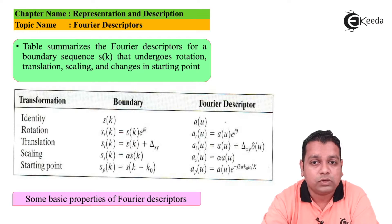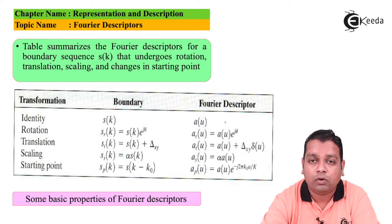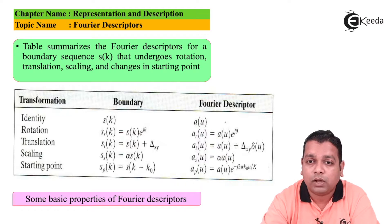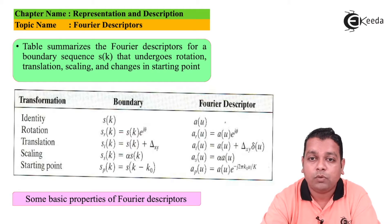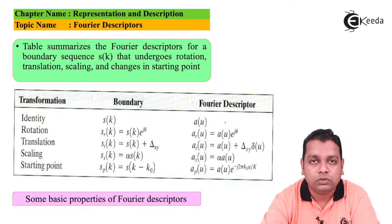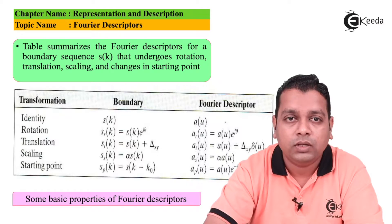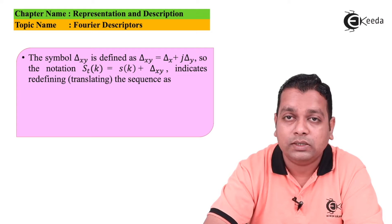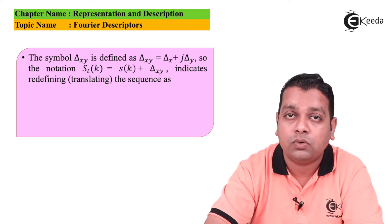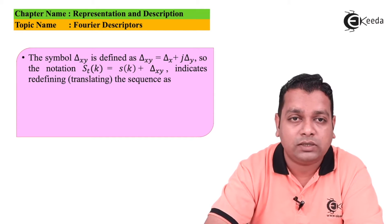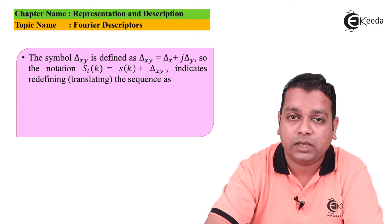For translation, a_t(u) = a(u) + Δ_{xy}·δ(u). For scaling, a_s(u) = α·a(u). For the starting point case, a_p(u) = a(u)·e^{−j2πk_0u/K}. The symbol Δ_{xy} is defined as Δ_{xy} = Δx + j·Δy.